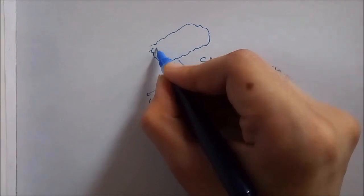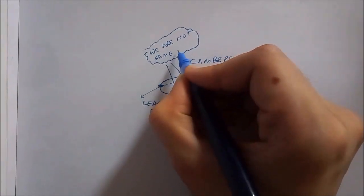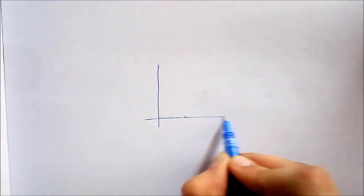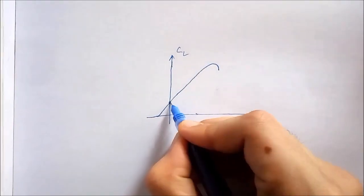Its Cl versus alpha curve looks something like this and this airfoil can produce lift even at zero degree angle of attack. Since at alpha equal to zero, there is some value of Cl and hence we have some lift.